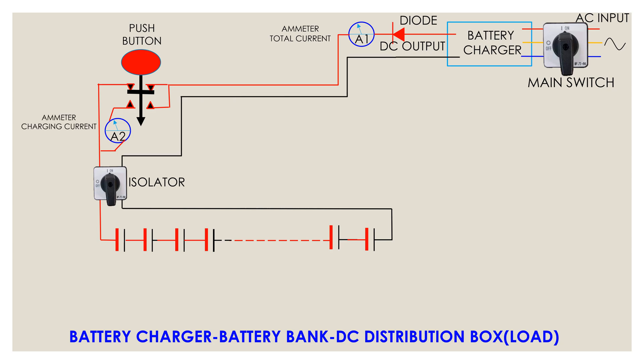In general, there are 110 numbers of battery cells in the bank to supply 220 volt DC.